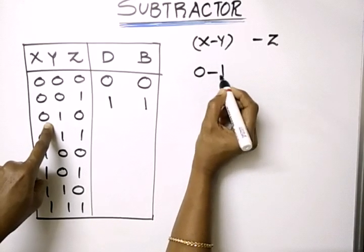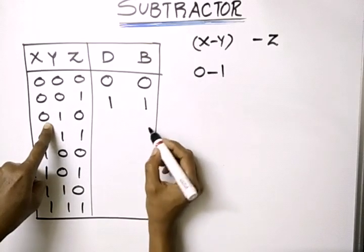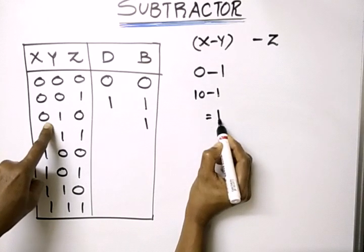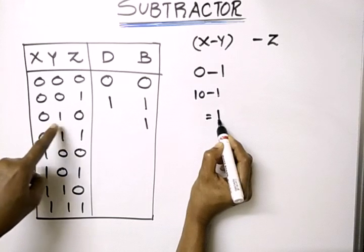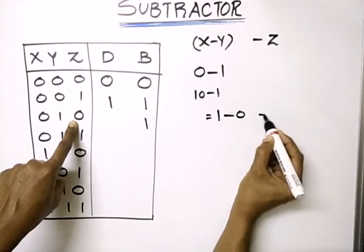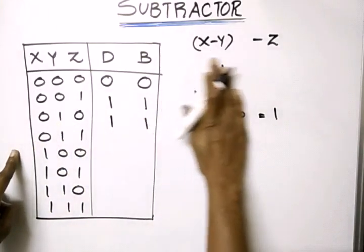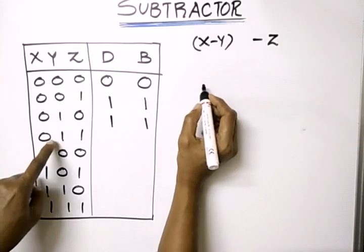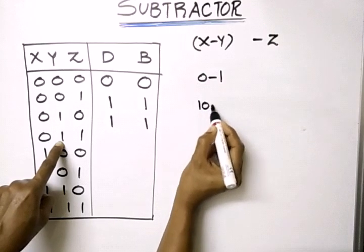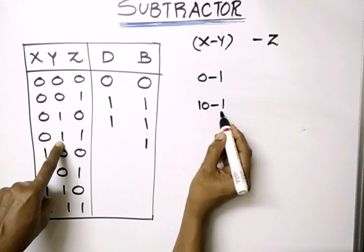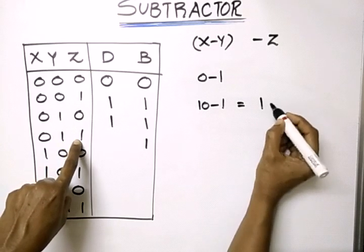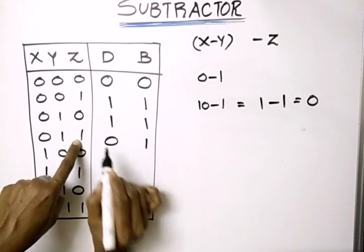For X=0, Y=1: 0 minus 1 requires a borrow, so borrow is 1, and 10 minus 1 equals 1. Then we subtract Z=0 from this result: 1 minus 0 equals 1, so difference is 1. For the next combination X=0, Y=1, Z=1: 0 minus 1 again takes borrow, giving result 1, then subtract Z=1.